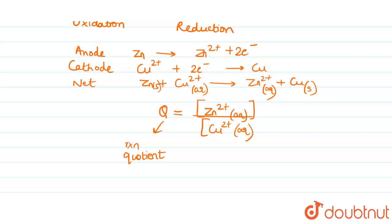After this we need to use one formula which is called as EMF or E cell is equal to E naught cell minus 0.06 upon N into log to the base 10 into Q.